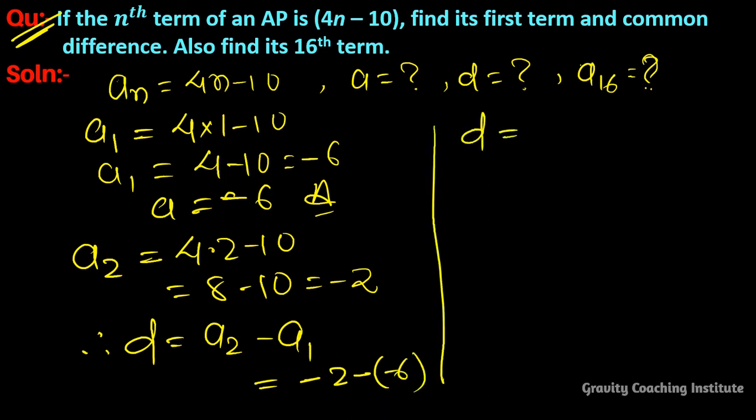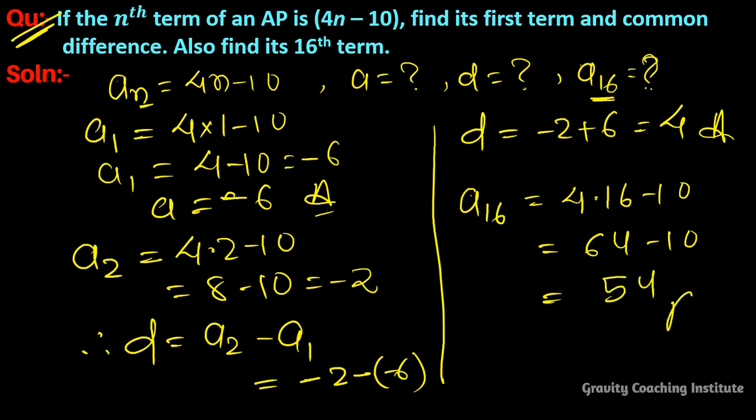So d is equal to minus 2 plus 6 equal to 4, answer. a₁₆ equal to, so now we put the value of n equal to 16, so 4 into 16 minus 10, so 64 minus 10 is equal to 54, answer.